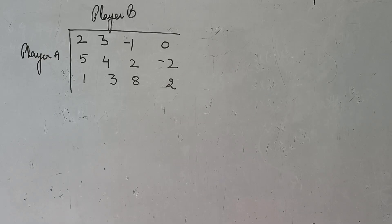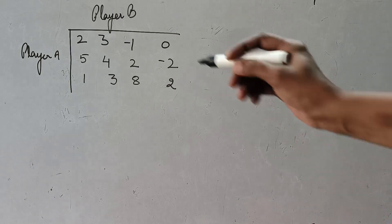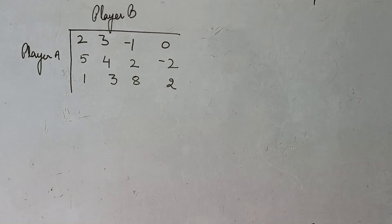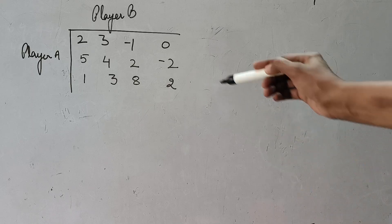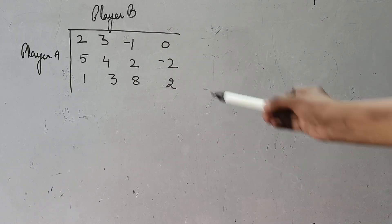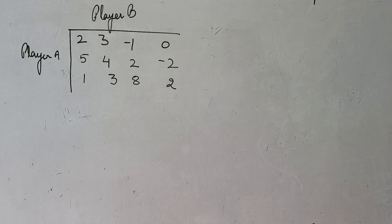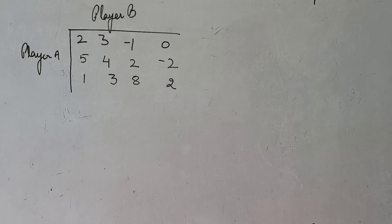Let us learn this method with a practical question. The iterative method will be applied to calculate the approximate value of game. The first step is for player A to choose the strongest, superior row. You have to identify which row has the superior values. The first row has a negative value and a zero; the second row also has a negative value; but the third strategy of player A seems to be the superior row.